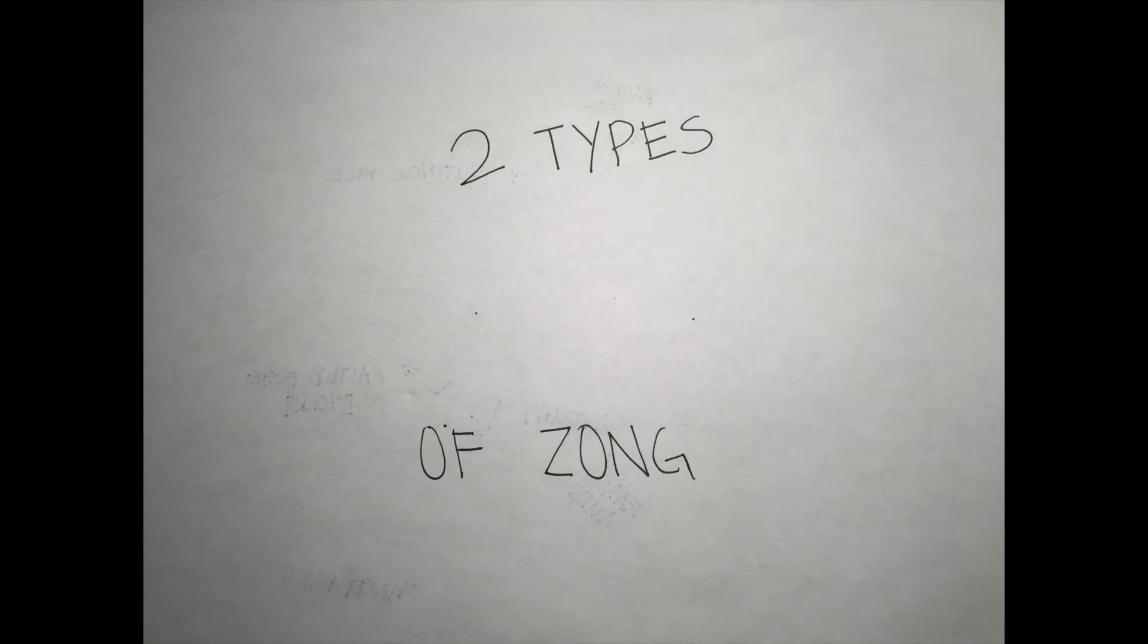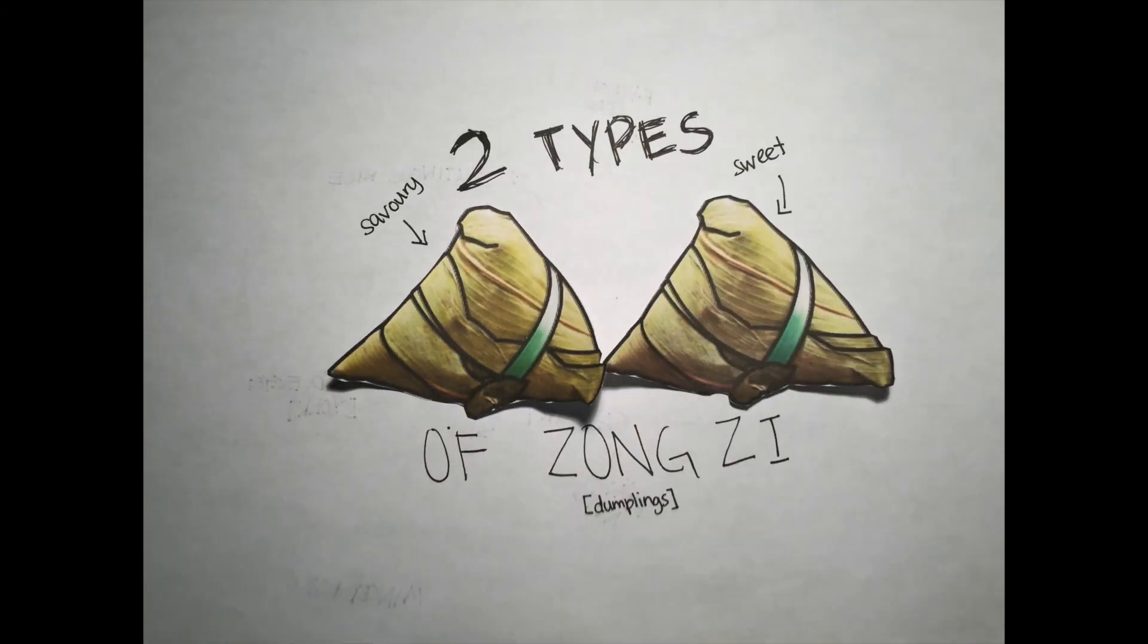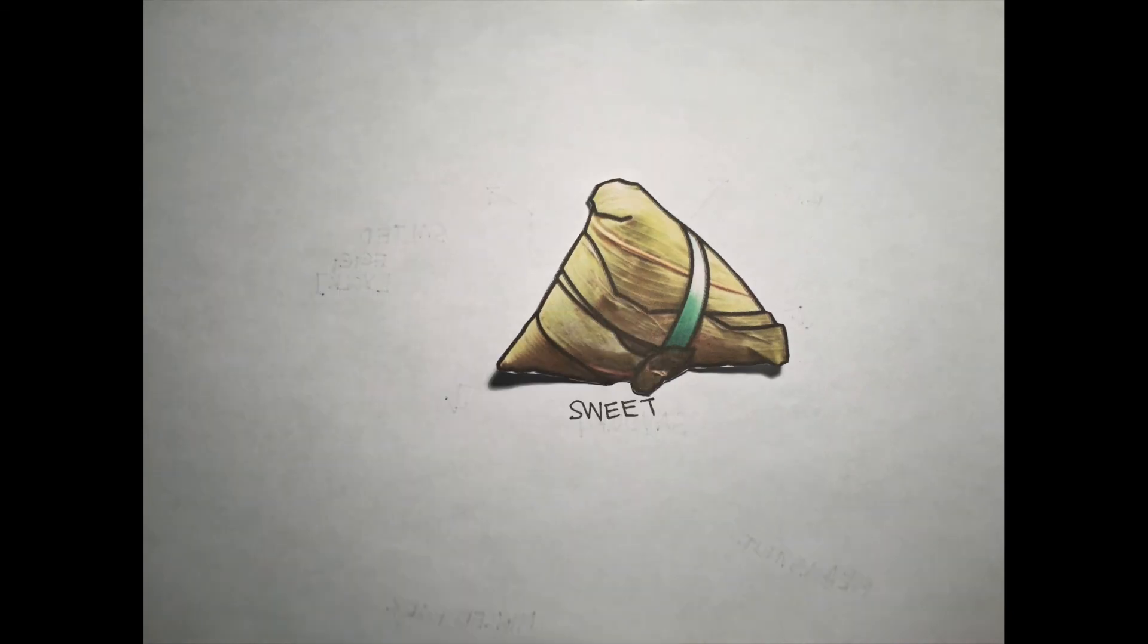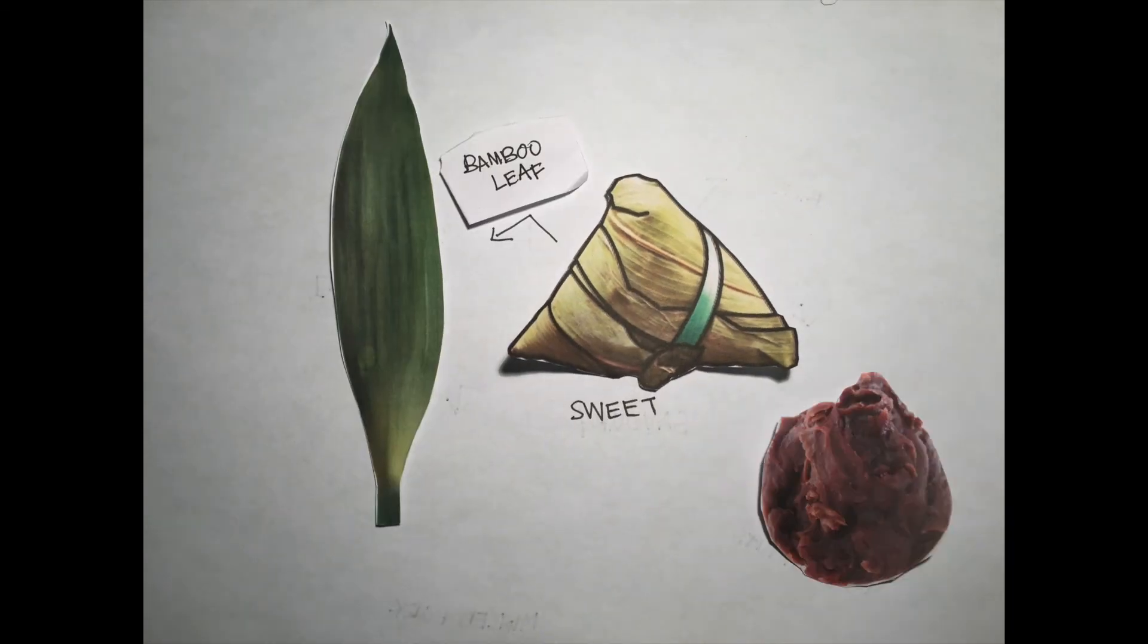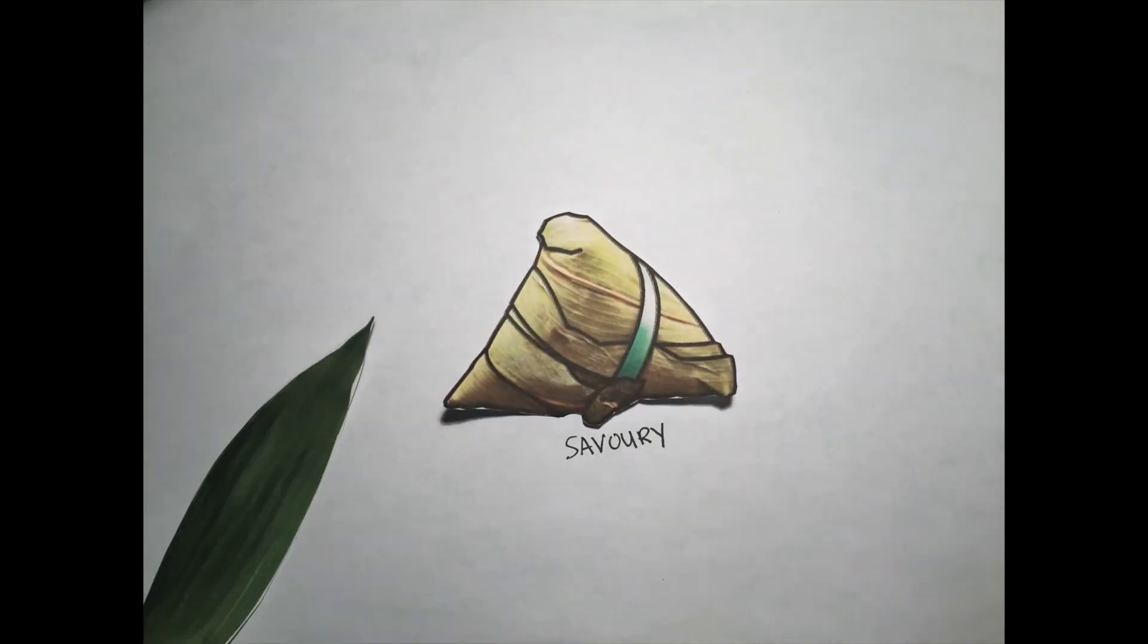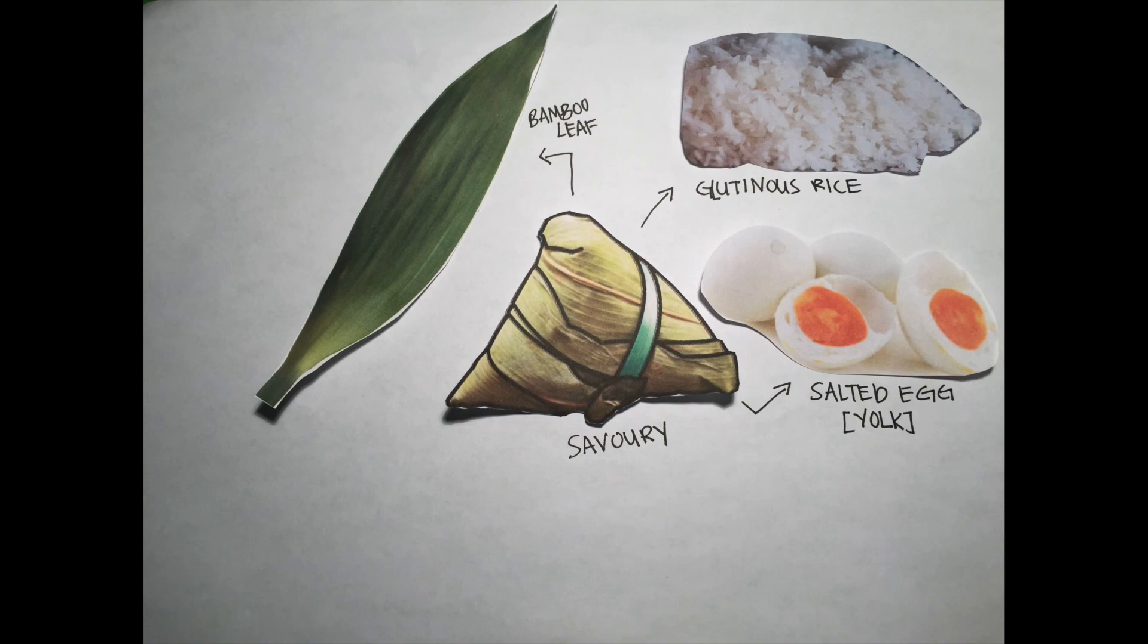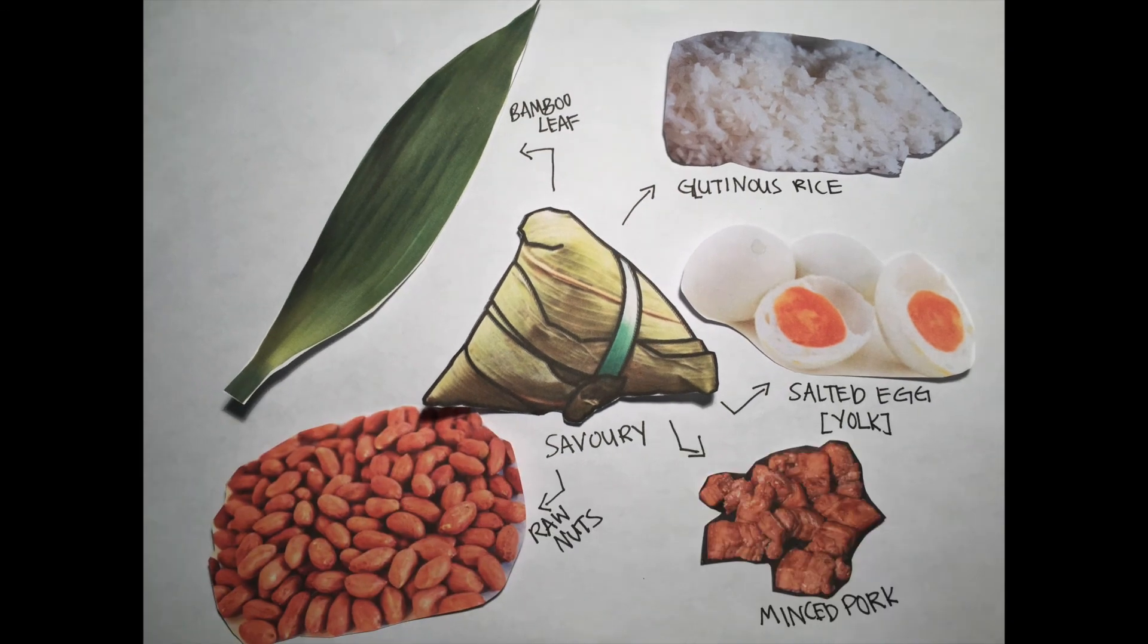Currently, we have two types of dumplings. One is savory and another is sweet. The sweet one contains bamboo leaves, red bean paste, and glutinous rice. However, the savory one has bamboo leaves, glutinous rice, salted egg yolk, peanuts, and minced pork.